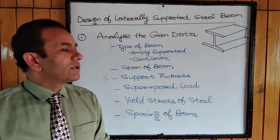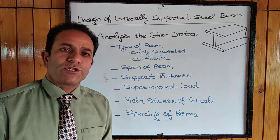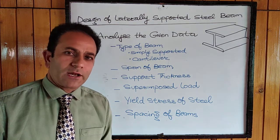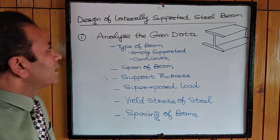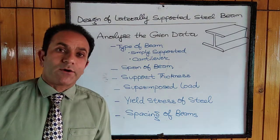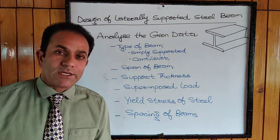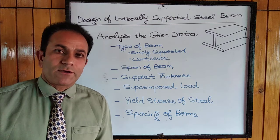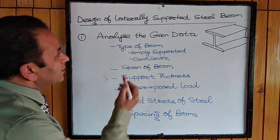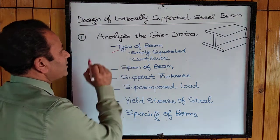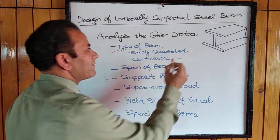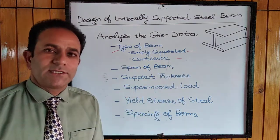We'll go through the stepwise procedure we have to follow for designing the steel beam. Initially, we should analyze the data that has been provided for the particular beam. The first item in the data is the type of beam — whether it is a simply supported one or a cantilever.